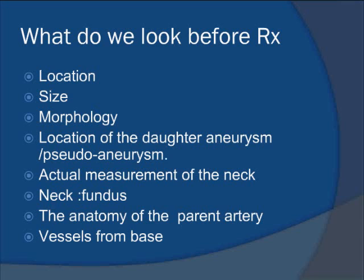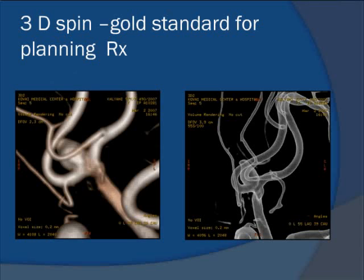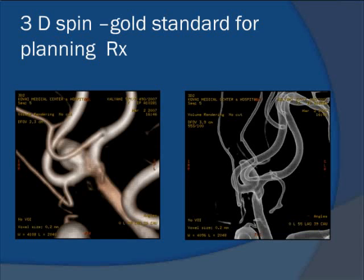We also look for vessels that arise from the base of the aneurysm, lest we coil them during the procedure and produce a stroke. In all respects, a 3D angiogram answers every single question we would have before planning therapy. This picture shows a 3D image — the neck, the relationship of vessels — and in reality we can spin it in any direction, allowing exquisite detail about the morphology and anatomy of an aneurysm.